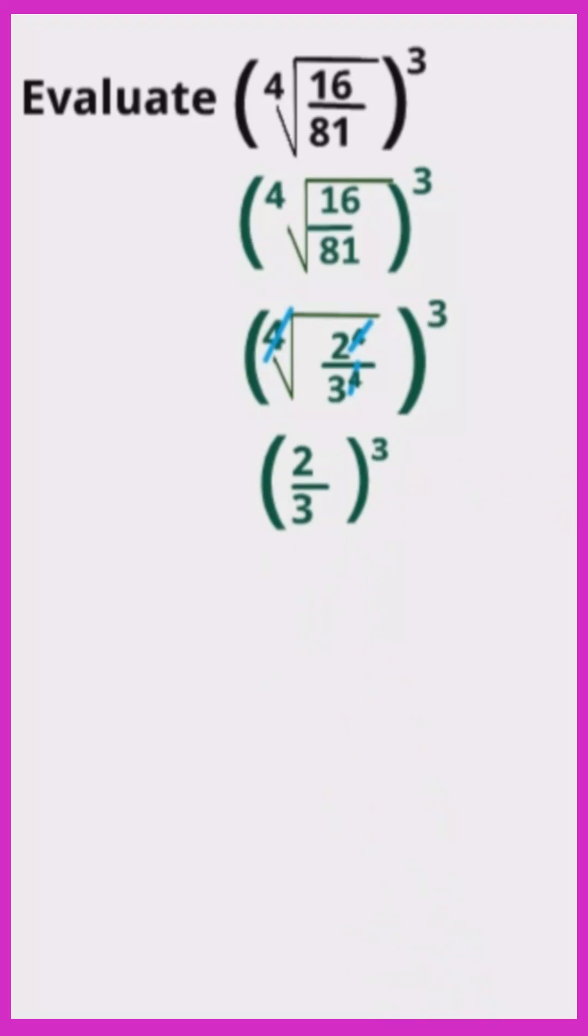Now the problem isn't finished yet. We need to distribute the exponent 3 to the numerator 2 and denominator 3. So we will have 2 to the power of 3 and 3 to the power of 3.